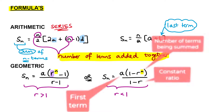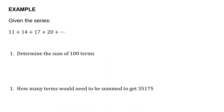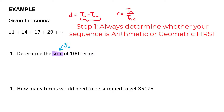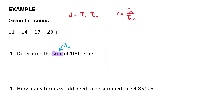In the first example, we're given the series 11 + 14 + 17 + 20... and asked to determine the sum of 100 terms. Whenever we're talking about a sum, that deals with Sn. An important starting point is to identify the kind of series given. We can check using the difference formula (Tn minus Tn-1) or the ratio formula (Tn over Tn-1), subtracting or dividing successive terms respectively.